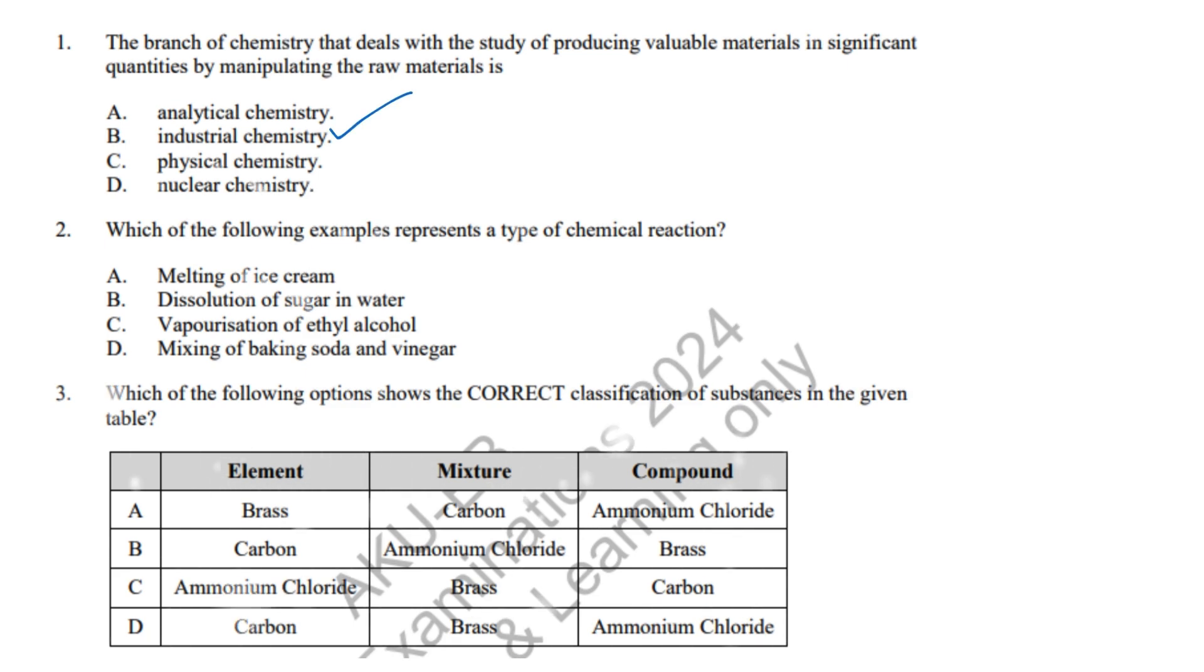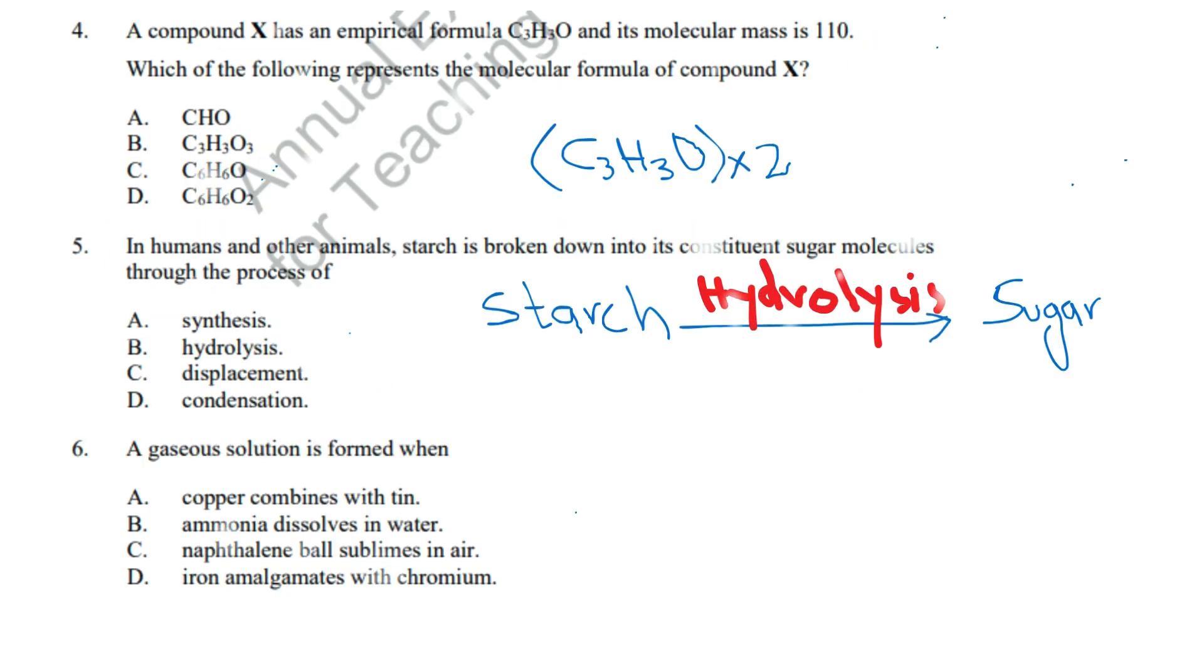Question 2: A chemical reaction occurs when baking soda and vinegar react, releasing CO2 gas. Correct answer: D, Mixing of baking soda and vinegar. Question 3: Carbon is an element, brass is a mixture, and ammonium chloride is a compound. Correct answer: D, Carbon, brass, ammonium chloride.